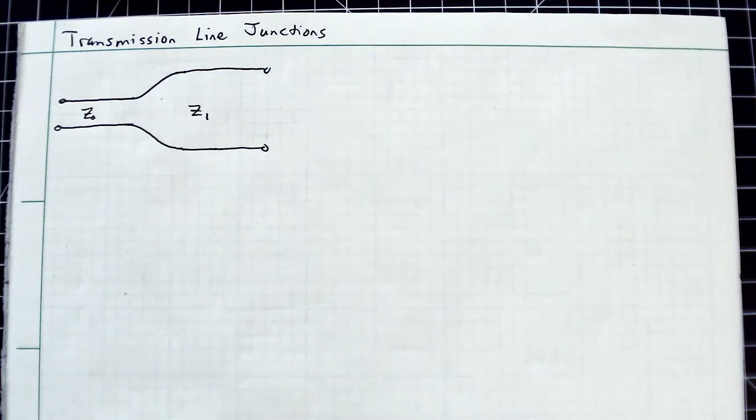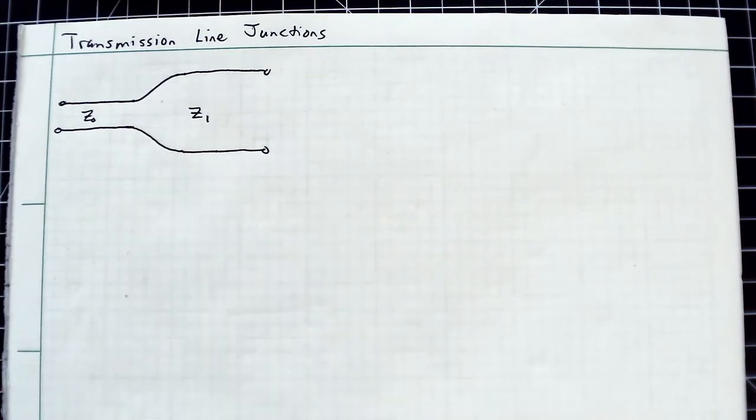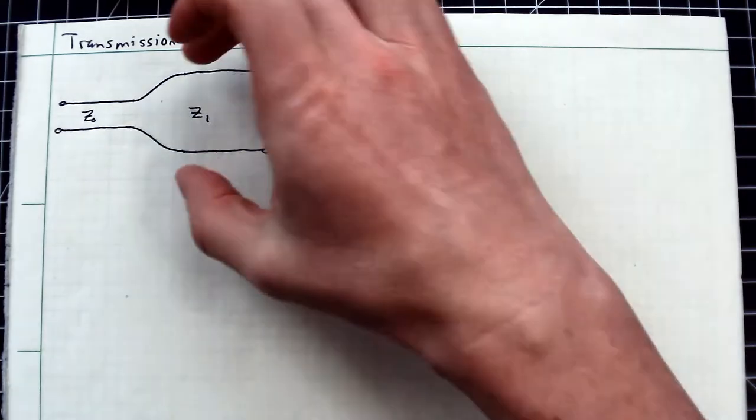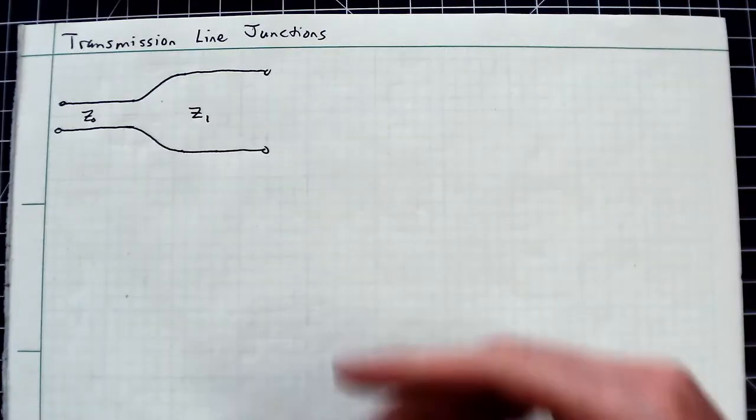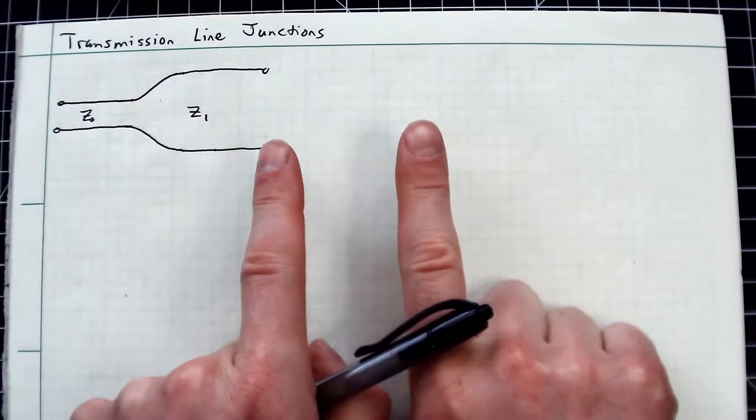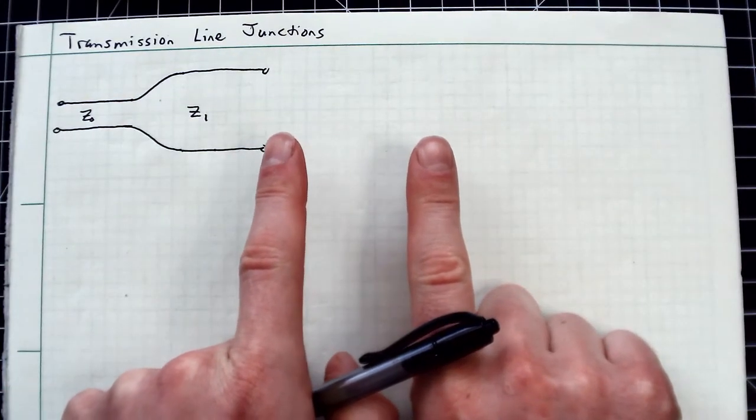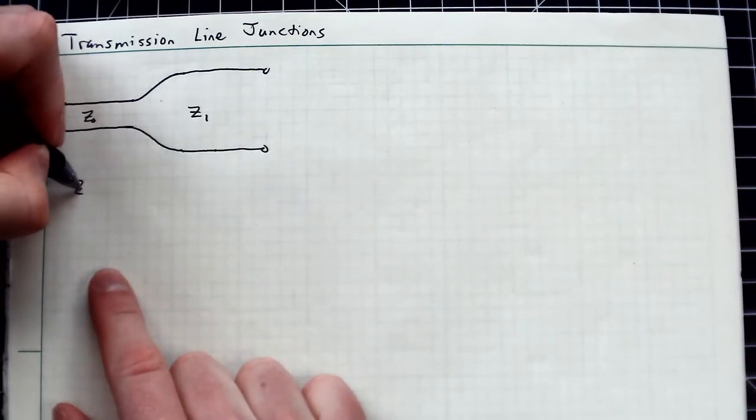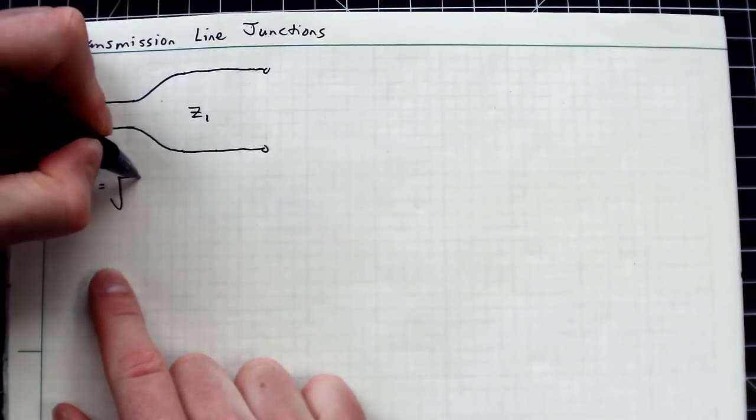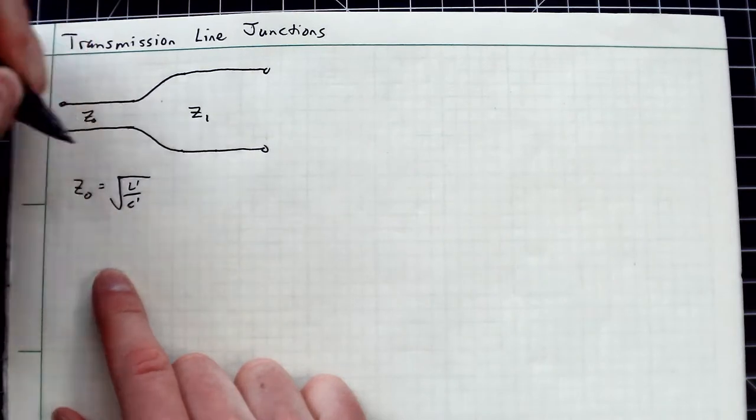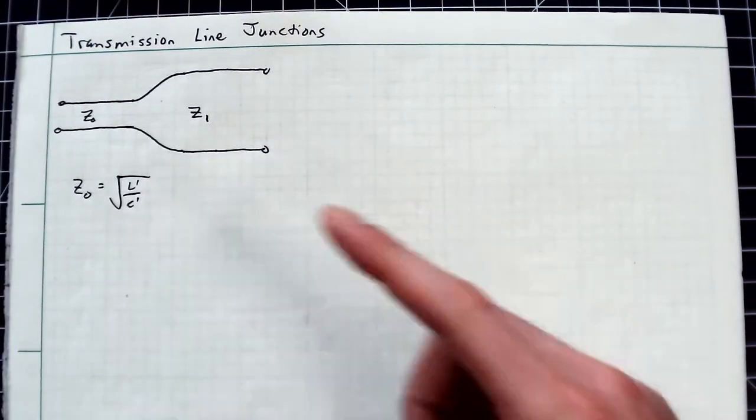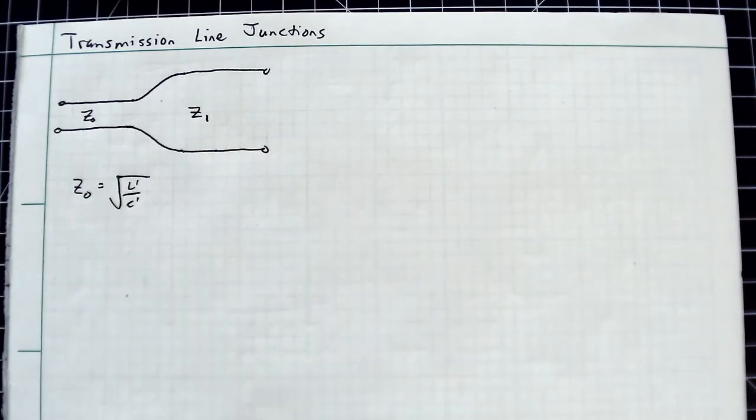Hi everyone, let's talk about transmission line junctions. Imagine a parallel wire transmission line - two wires side by side. There is some characteristic impedance associated with that, which equals the square root of L' over C'. That inductance and capacitance is a function of the physical geometry of those wires and the voltages between them.